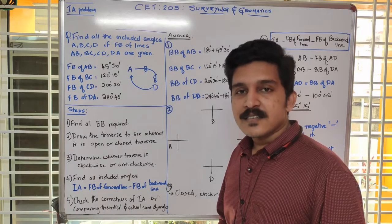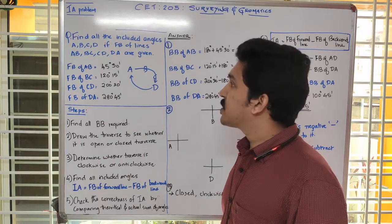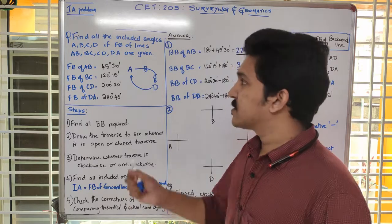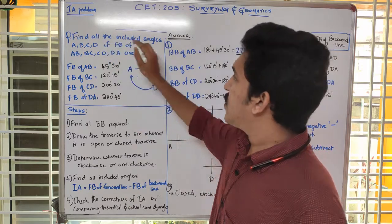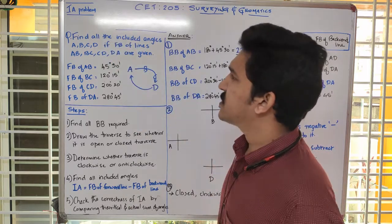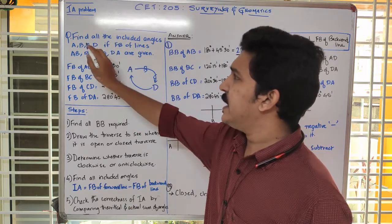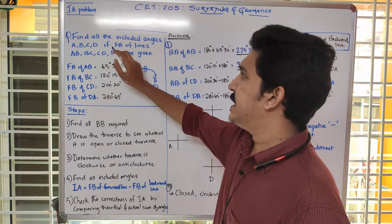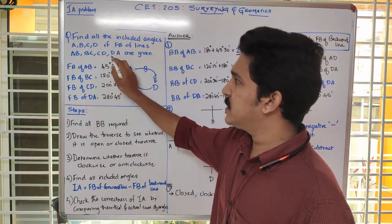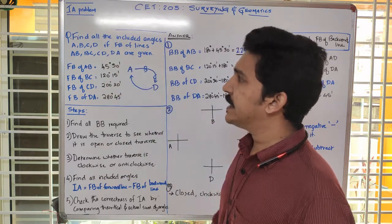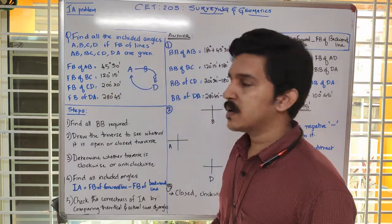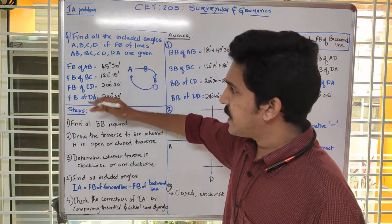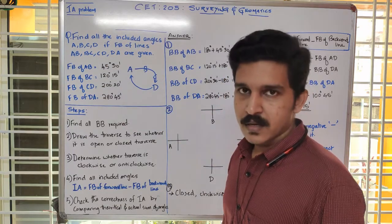Let us discuss the problem related to included angles. Find all the included angles — angle A, B, C and D — if the fore bearings of lines AB, BC, CD and DA are given. These are the four fore bearings of the various lines.